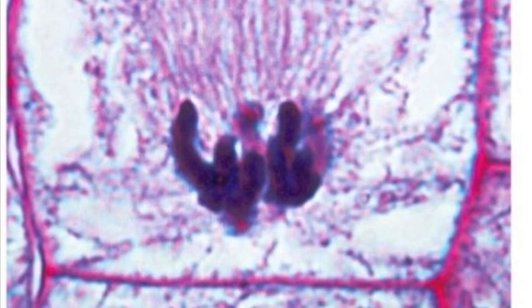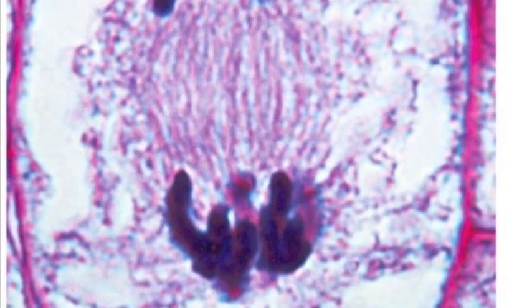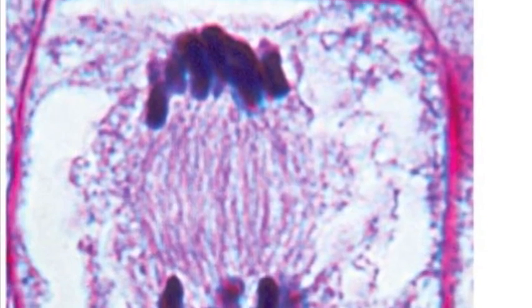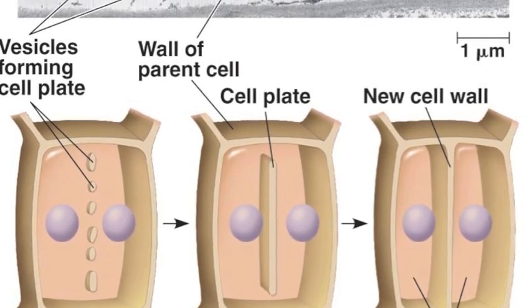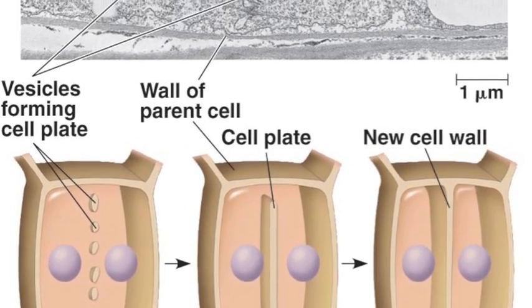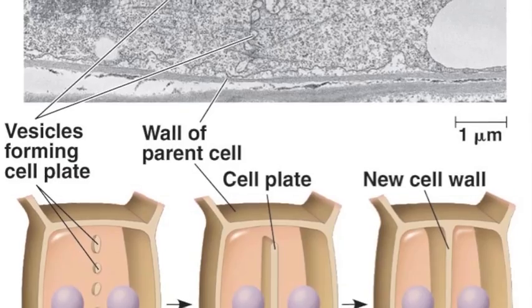This is the illustration of mitosis in an animal cell. It is very similar in a plant cell with a few differences. Most notably, a plant cell has no centrioles and only has spindles. Another difference is that in cytokinesis, the plant cells form a cell plate from the inside to out to divide the daughter cells.